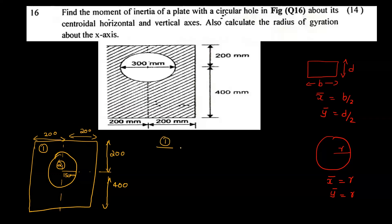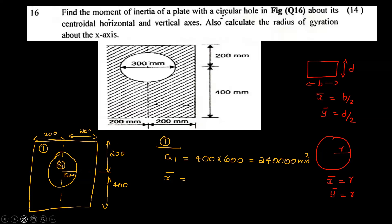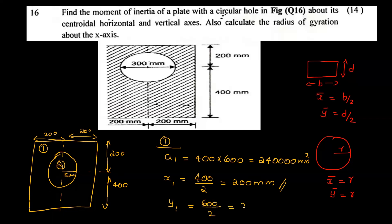Starting with the rectangle: area A1 equals length into breadth, that is 400 into 600, which equals 240,000 mm². The centroid coordinates are x1 equals 400 divided by 2 equals 200 mm, and y1 equals 600 divided by 2 equals 300 mm.